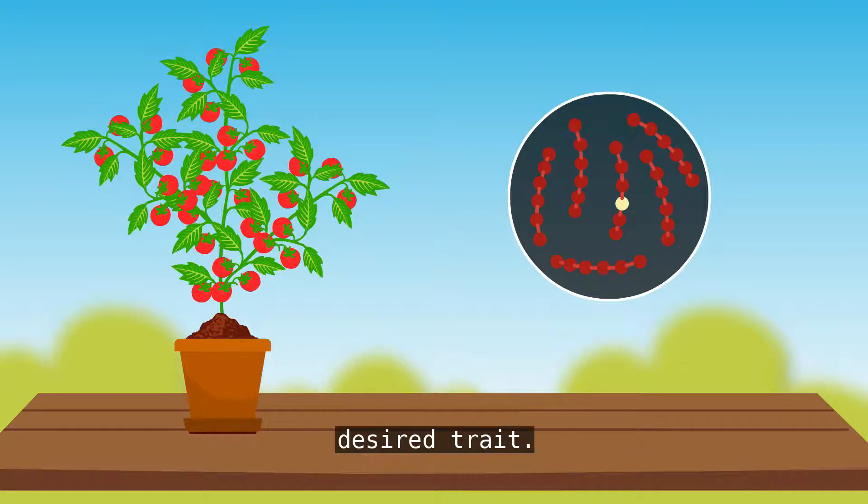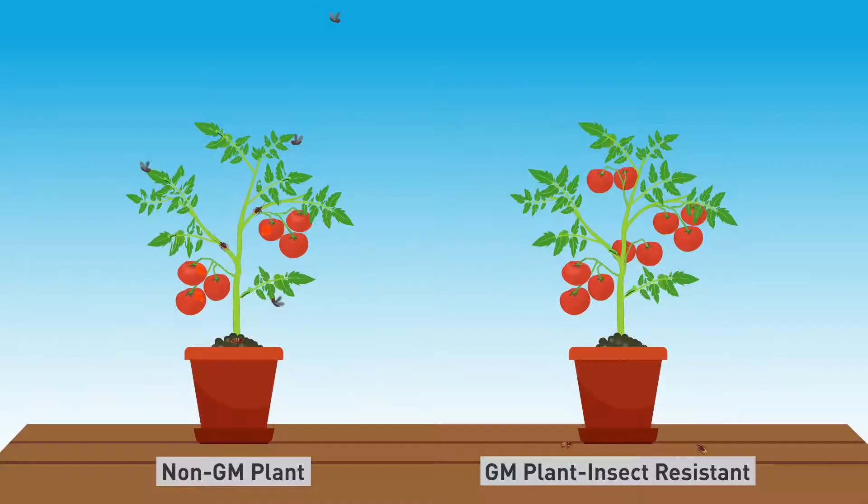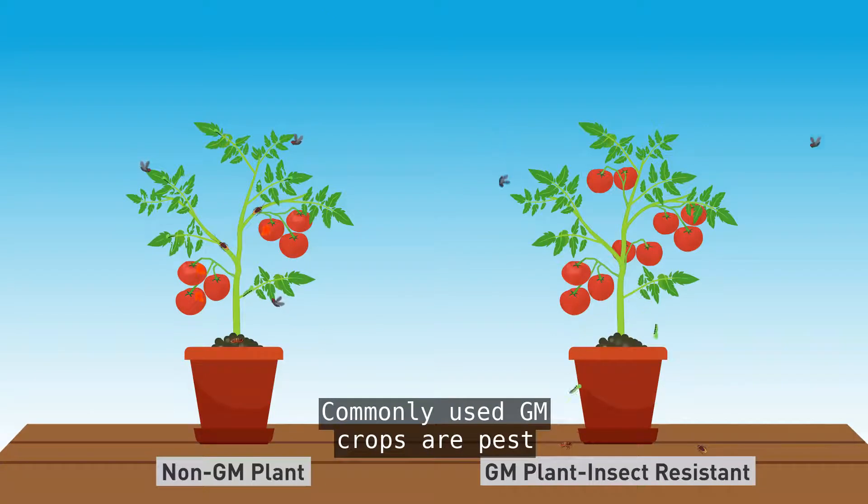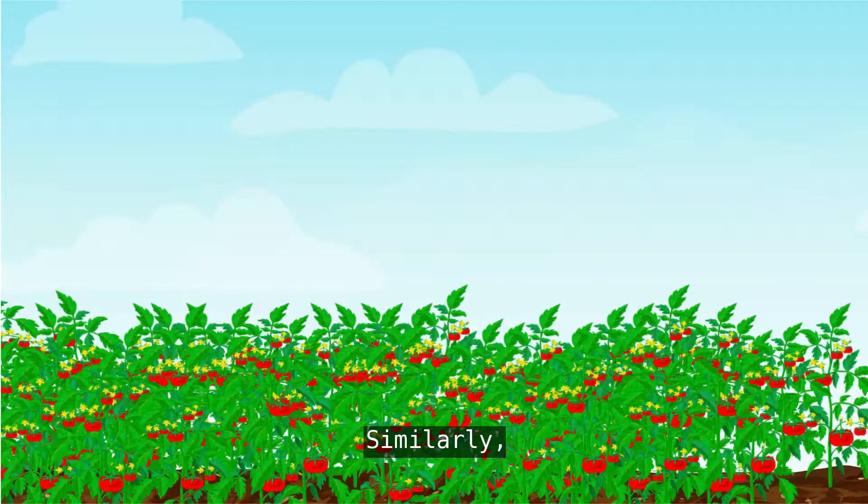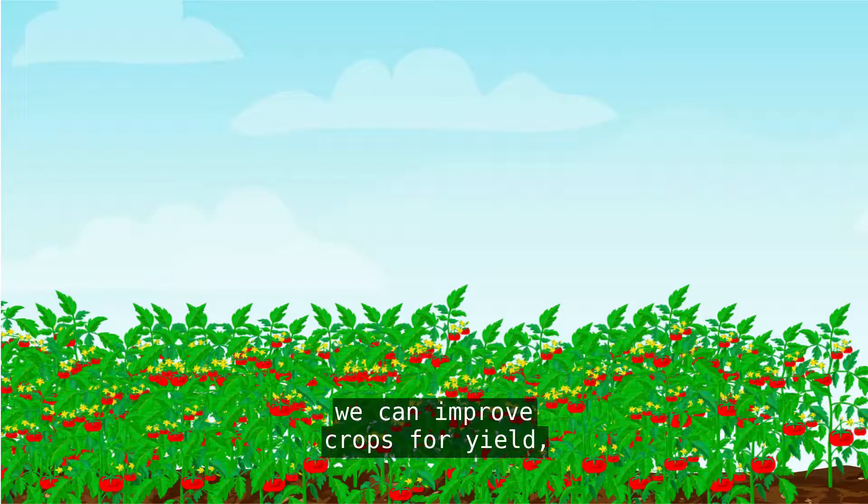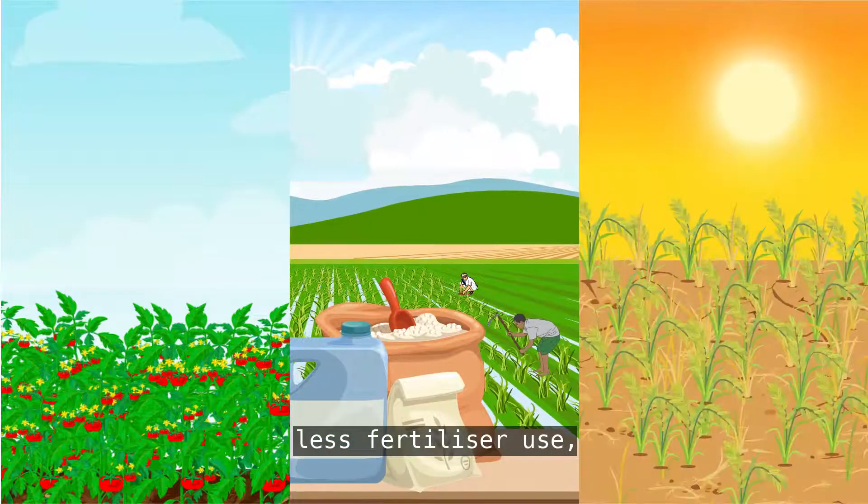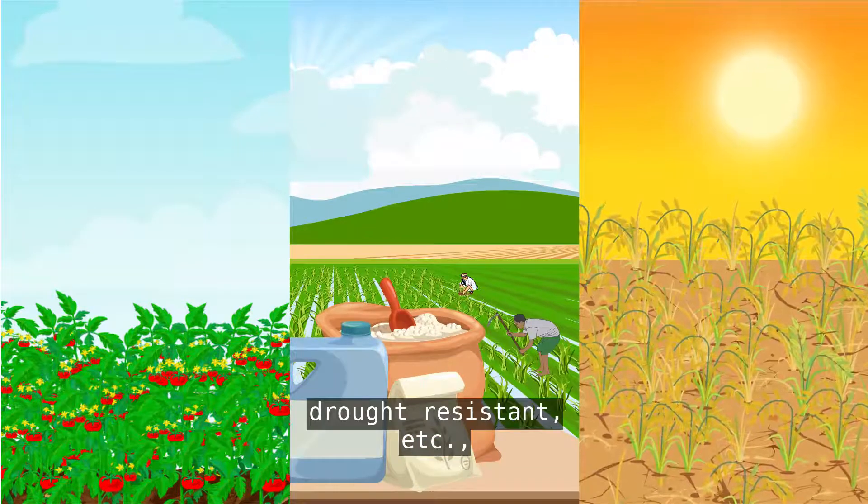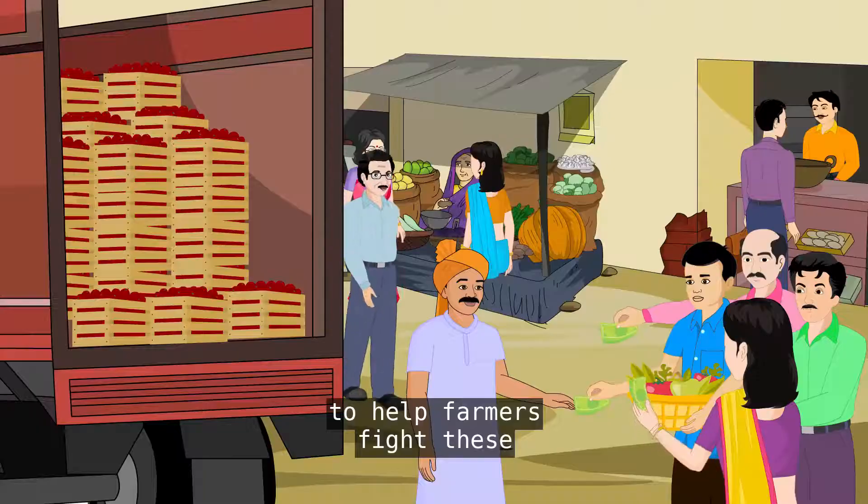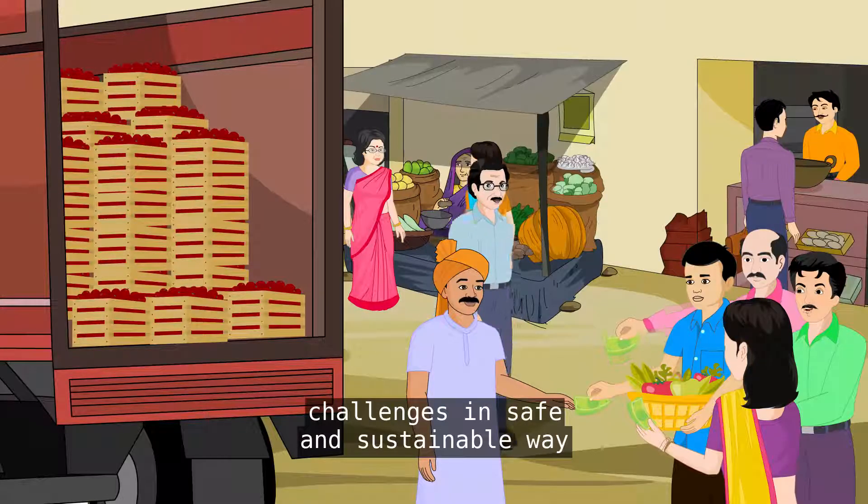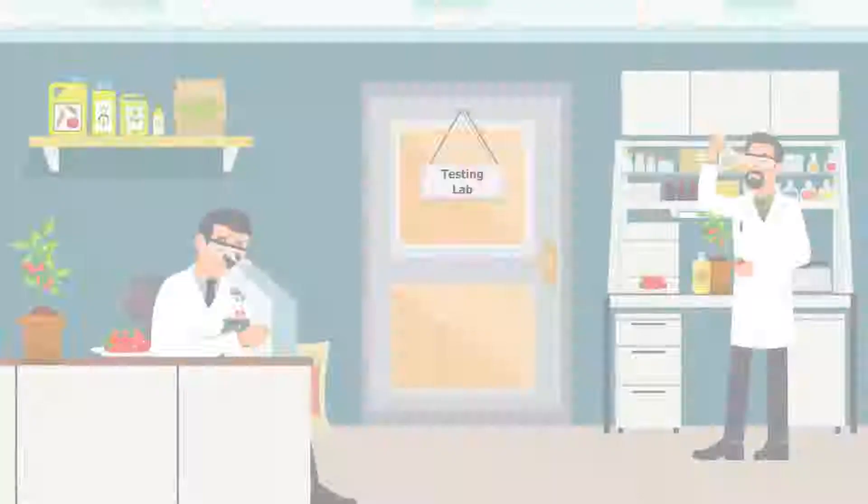To get plants with desired traits, commonly used GM crops are pest-resistant. Similarly, we can improve crops for yield, less fertilizer use, drought resistance, and more to help farmers fight these challenges in a safe and sustainable way.